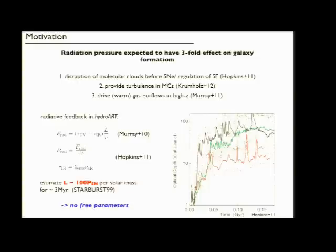Various theoretical and observational works have pointed out that radiation pressure is a very important mechanism in galaxy formation and it's expected to have at least a threefold effect. First, it disrupts molecular clouds way before the first supernovae go off, so it regulates the star formation. It provides turbulence in molecular clouds and it drives gas outflows at high redshift.